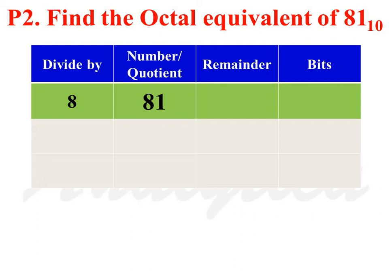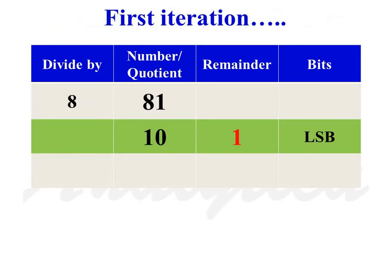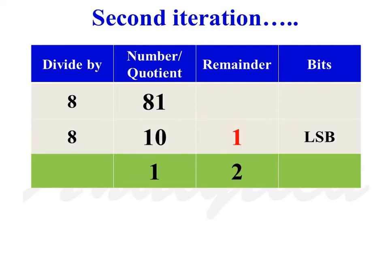Second problem: find the octal equivalent of number 81. To find the octal equivalent of decimal number 81, divide 81 by 8. We will get 10 as the quotient and 1 as the remainder. As quotient is not equal to 0, we have to do this division operation a second time. When we divide 10 by 8, we will get 1 as the quotient and 2 as the remainder.